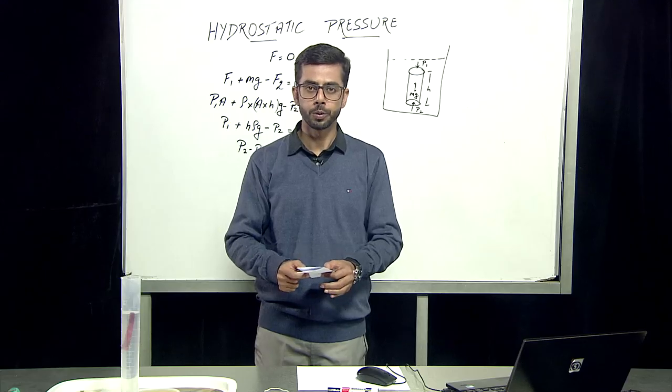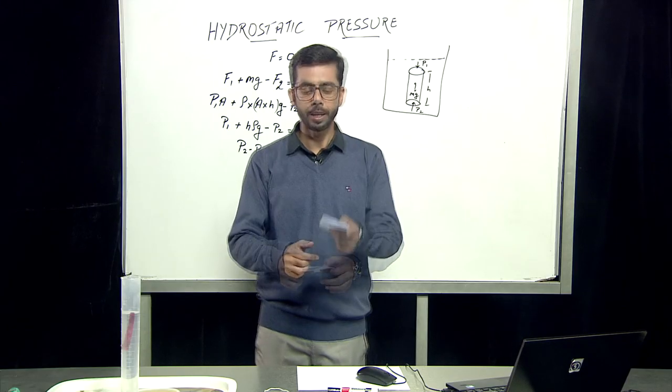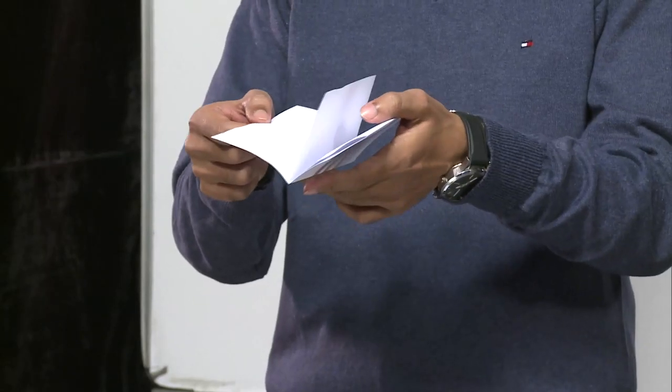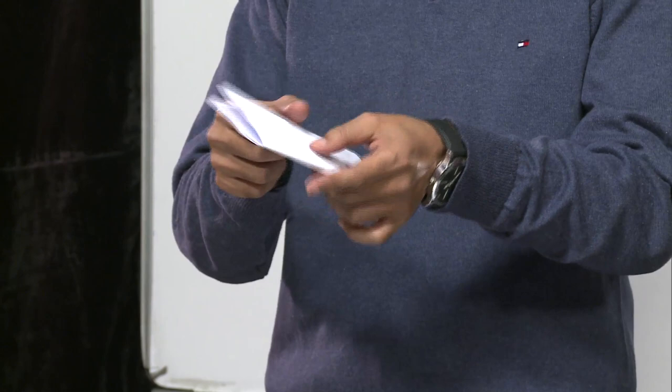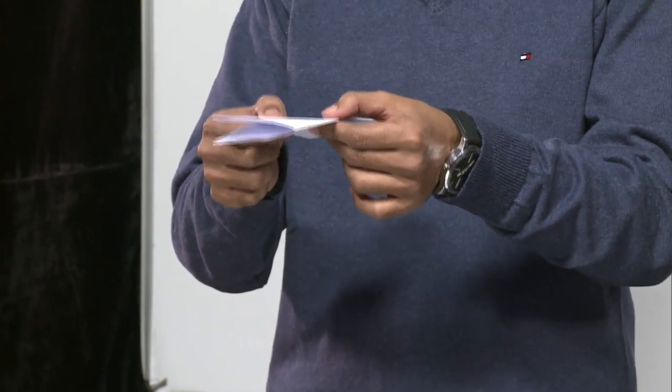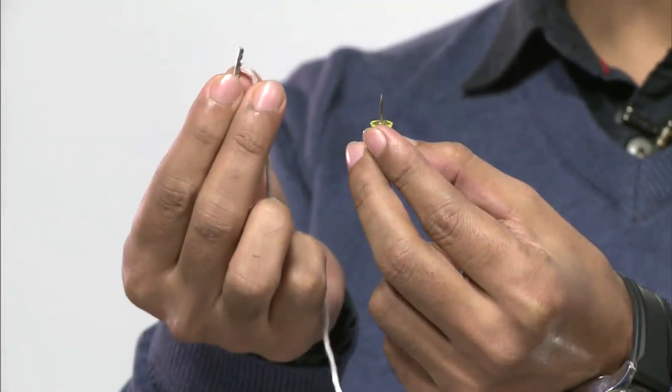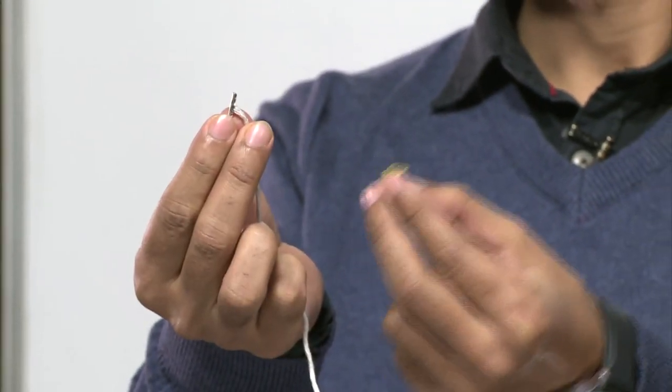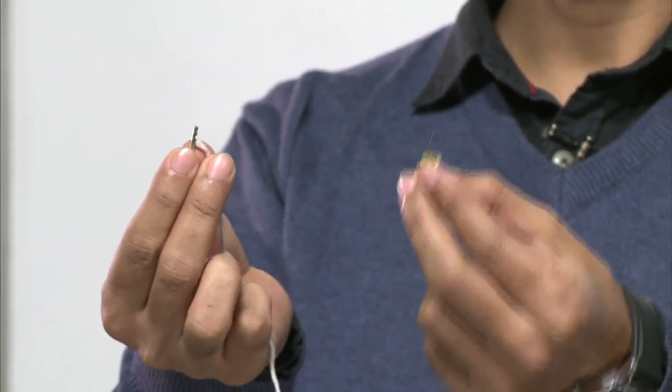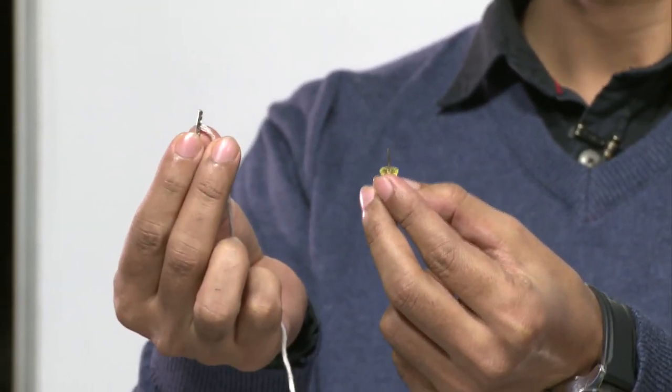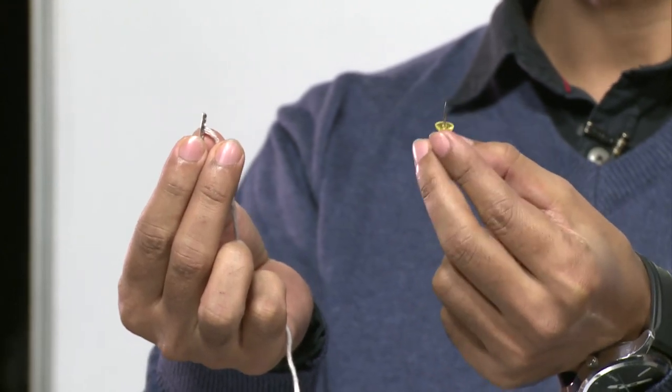First we should know what is actually pressure. I have this paper which is a simple A4 size sheet folded into four folds along with two types of pin. One of them is a flatter pin and the other is a very sharp pin. The flatter pin has a large area comparative to the sharp pin.